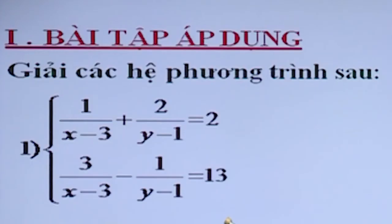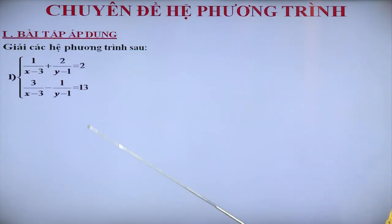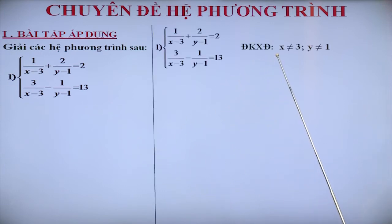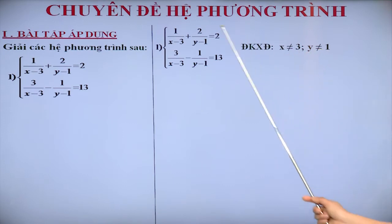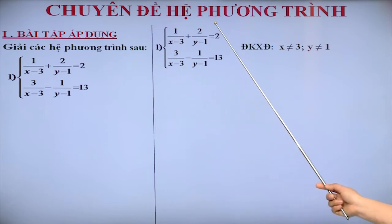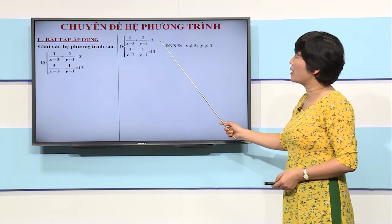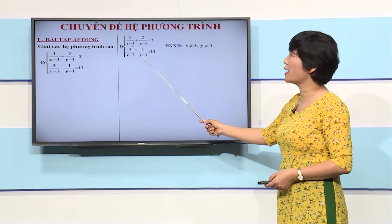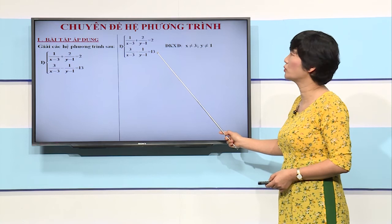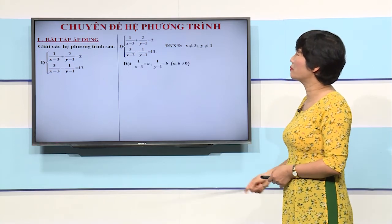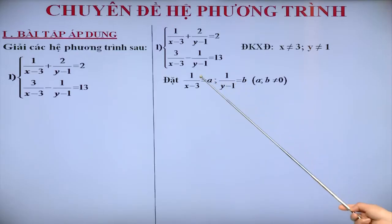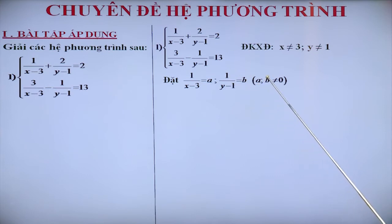Các phương trình của hệ này có chứa ẩn ở mẫu. Do đó, bước thứ nhất, chúng ta sẽ tìm điều kiện xác định. Điều kiện xác định của hệ phương trình là X khác 3 và Y khác 1. Hệ phương trình mới này không phải là hệ bậc nhất hai ẩn. Tuy nhiên, các phương trình của hệ có thể biểu diễn qua 2 đại lượng: đó là 1/(X trừ 3) và 1/(Y trừ 1). Do đó, nếu đặt A = 1/(X trừ 3) và B = 1/(Y trừ 1), với điều kiện A và B phải khác không.